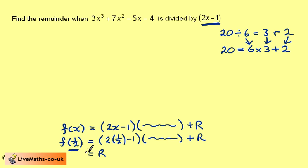So all we need to do is evaluate f of a half to find the remainder. So if we set f of x is 3x cubed plus 7x squared minus 5x minus 4, to find the remainder, all we need to do is evaluate f of a half.